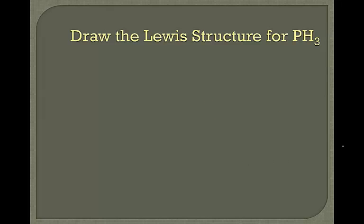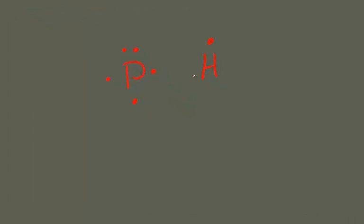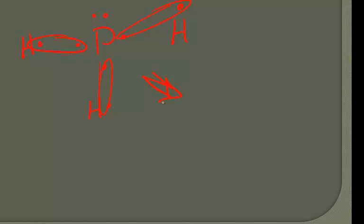Let's take a look at the Lewis structure for PH3. Phosphorus has five valence electrons, and hydrogen has one valence electron. So we'll see a sharing here, a sharing here, and a sharing here. This means our Lewis structure will be phosphorus with its two valence electrons, single bonded to hydrogen, single bonded to hydrogen, single bonded to hydrogen.